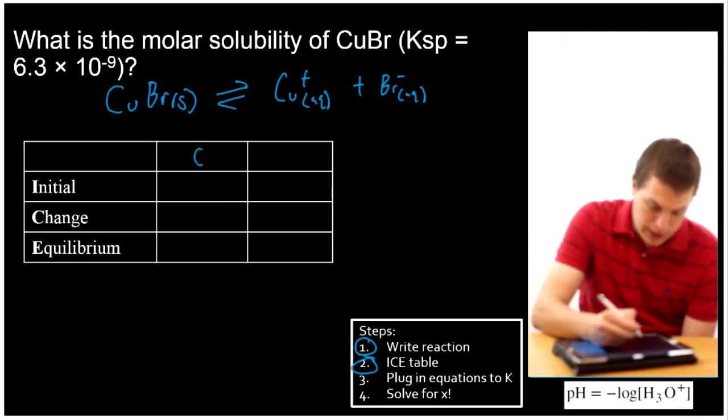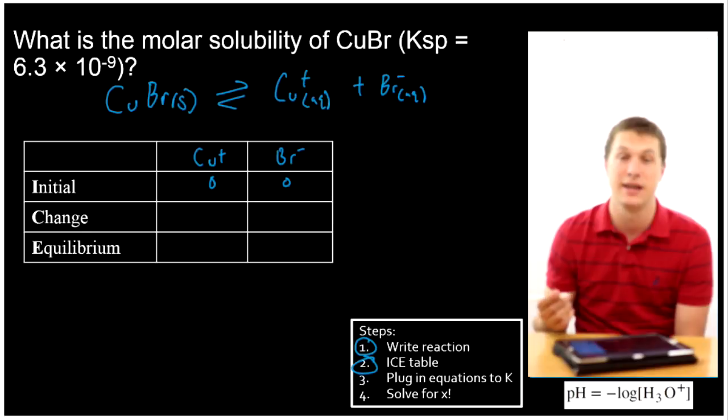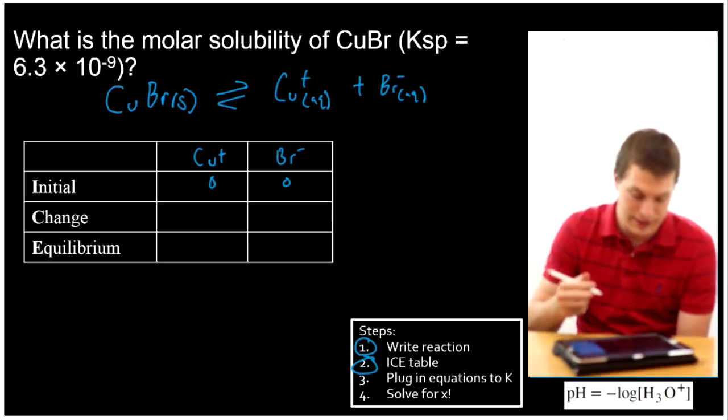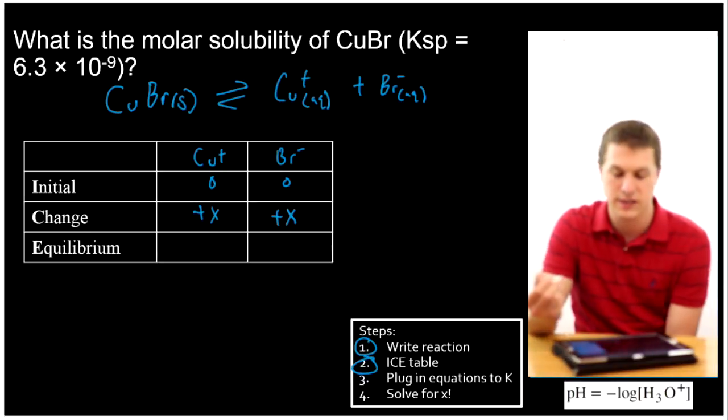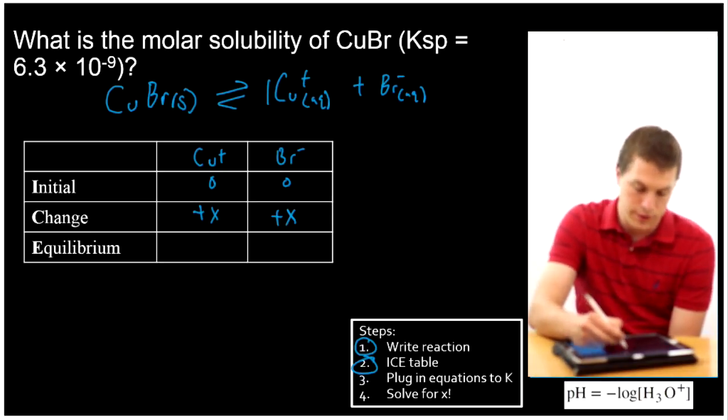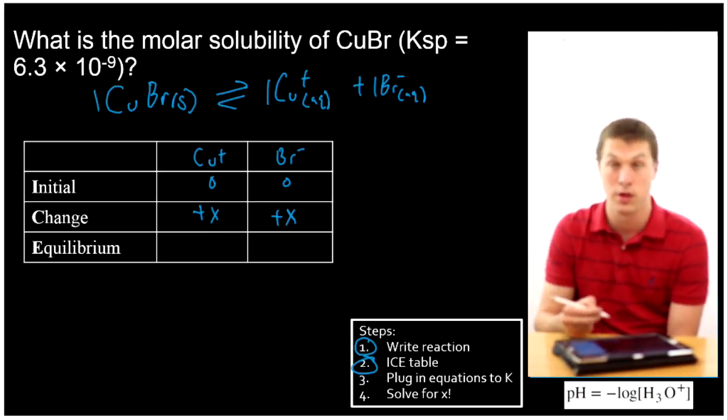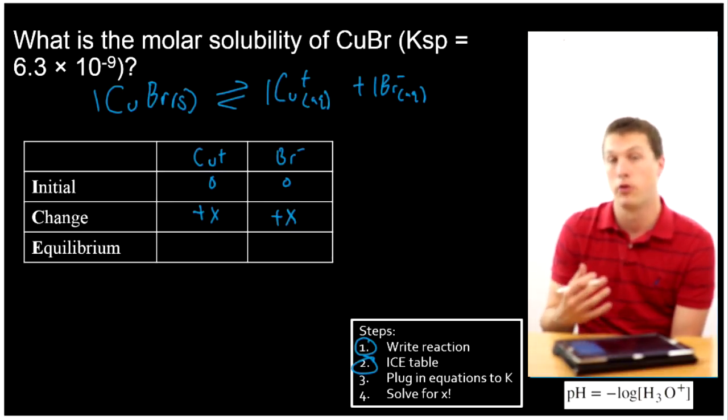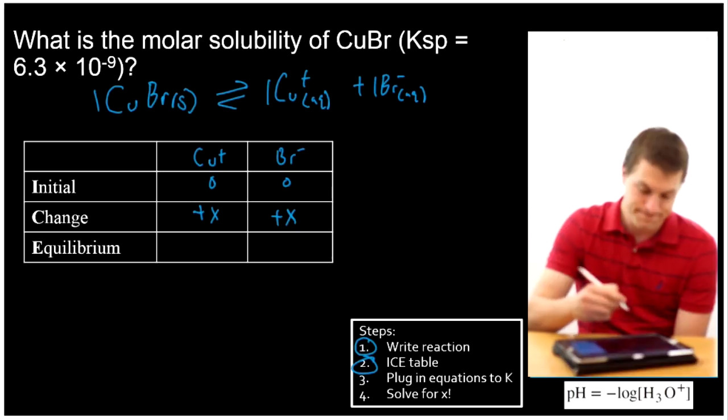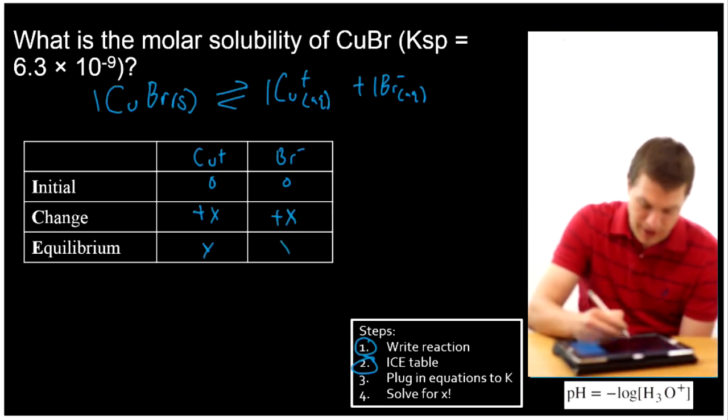And now I'm going to go ahead and do my ICE table. Well, my initial for copper plus is 0, and my initial for bromine minus is 0. You can see these are relatively easy ICE tables compared to some ICE tables you might have done. The change is going to be plus X and plus X. They're both plus X because they both have a 1 coefficient in front of them. Remember copper bromide has a 1 in front of it too. So when we solve for this X, we're solving for how much copper bromide can dissolve.